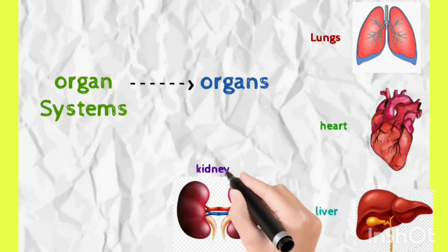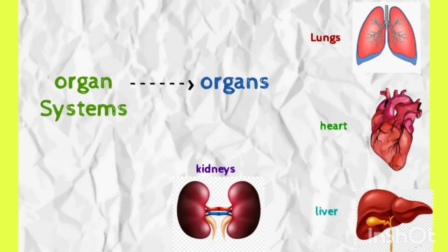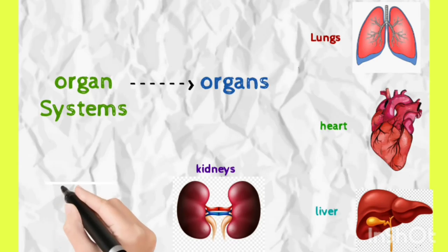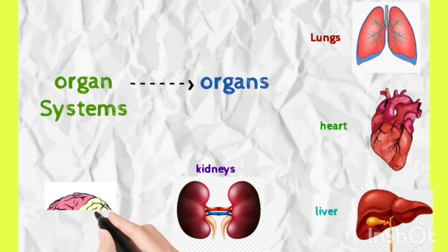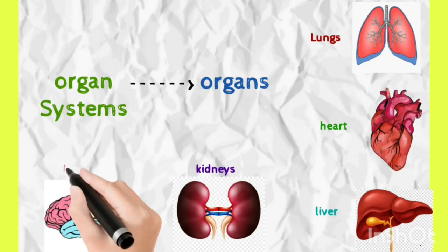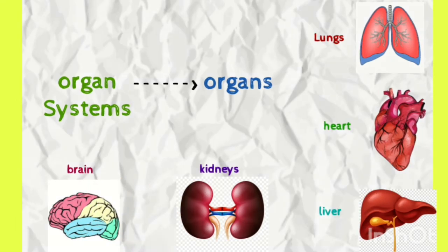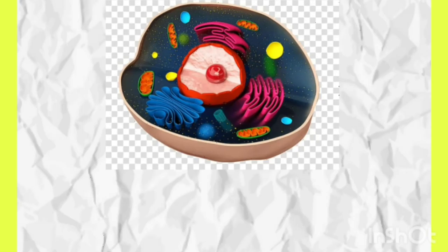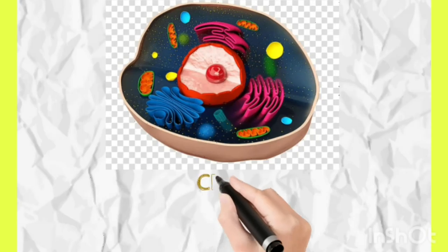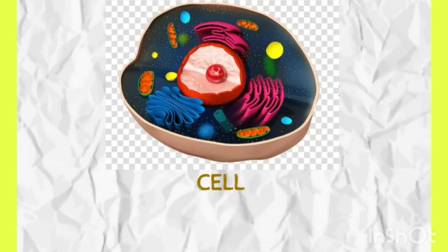Then we have kidneys in the excretory system. Kidneys release our waste material in the form of urine. After kidneys, we have the brain. The brain is a very important part of our body. We know that the brain and heart are vital organs. So these organs are also made of small units called cells.